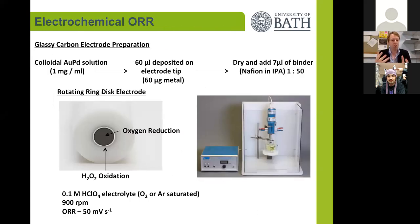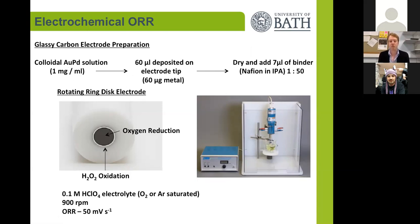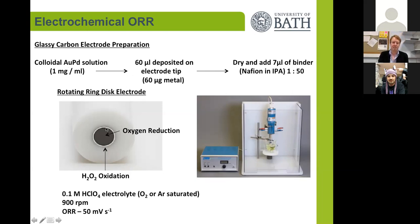We took the exact same colloidal solutions — in this case, not supporting the particles onto carbon but taking the colloidal solution directly and dropping it onto an electrode tip of glassy carbon. We add some binder and some IPA to help with the dispersion. The system we use to study this is a rotating ring disc electrode, which rotates. The catalysis we're interested in is happening on the carbon disc, surrounded by a platinum ring around the edge.